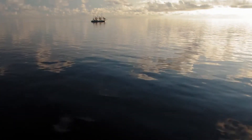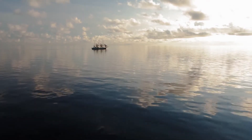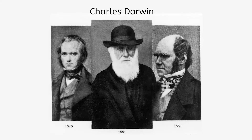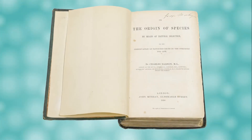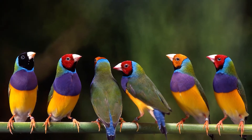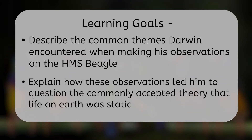This is exactly what happened to a young English naturalist in 1831. Today, we're going to follow the famous voyage of Charles Darwin on the HMS Beagle, as he travels the world in the 1830s. The things he sees on this voyage will alter the course of his life and the course of modern biology. By the end, you'll be able to describe the common themes Darwin encountered when making his observations, and explain how these observations led him to question the commonly accepted theory that life on Earth was static.